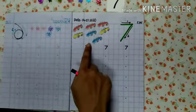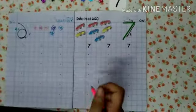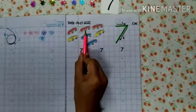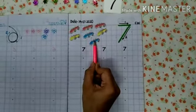What is this? What is this? Cars. How many cars are there? Count it. 1, 2, 3, 4, 5, 6, 7.